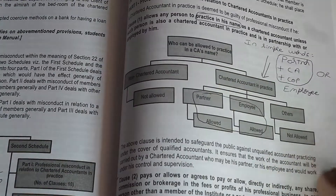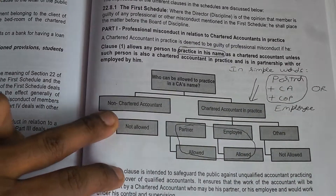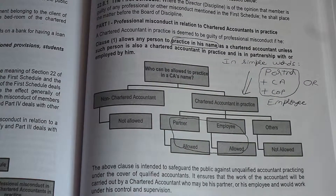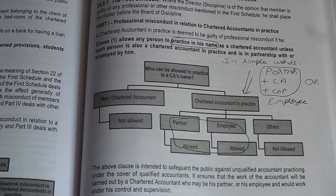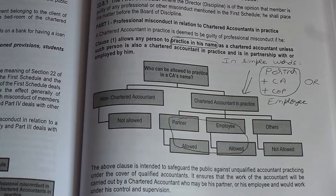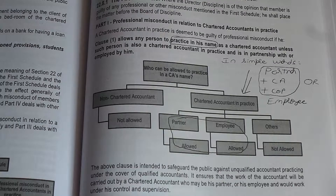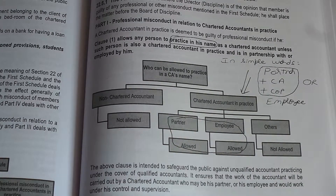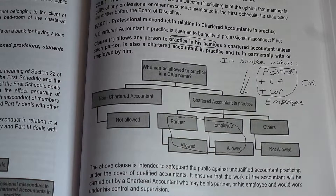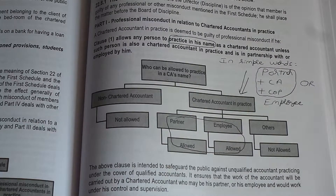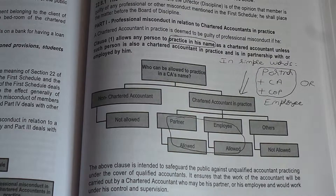Clause 1 states that a Chartered Accountant in practice shall not allow any person other than his partner — who must also be a CA in practice — or his employee to practice in his name. For example, in the firm XYZ and Associates, partners X, Y, and Z and their CA employees may represent the firm, but any outside person cannot have signing authority or any authority on behalf of the firm.